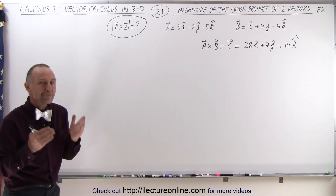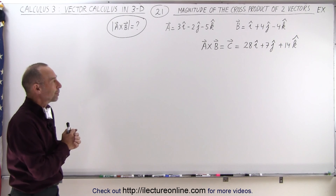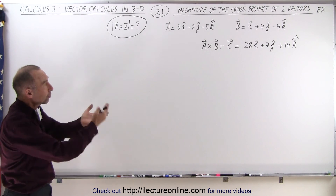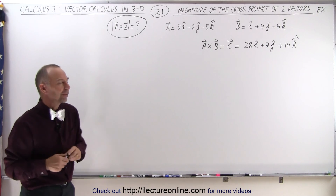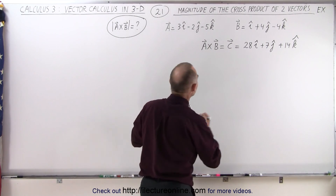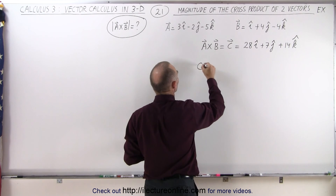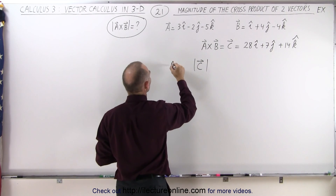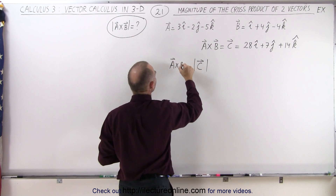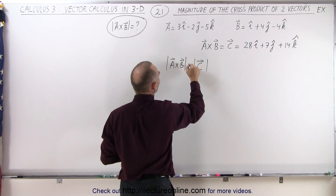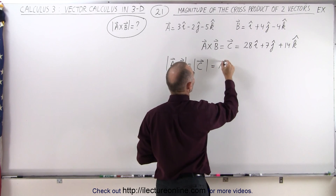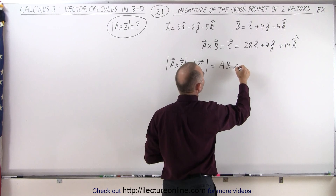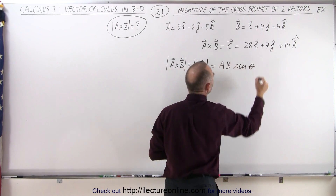Now we're going to find the magnitude of that cross product, and we can do that in two ways. Let's do it in two ways, compare the two results, and hopefully they'll come out to be the same. The first way would be to say that the magnitude of c, written as the magnitude of a cross b, is equal to the magnitude of a times the magnitude of b times the sine of the angle between the two.